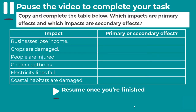We need to practise categorising effects of tropical storms into primary or secondary. Please pause the video to copy and complete the table. Which impacts are primary and which are secondary? The list includes: businesses lose income; crops are damaged; people are injured; cholera outbreak — cholera is a waterborne illness; electricity lines fall; coastal habitats are damaged. Resume the video when you are ready to mark your work.